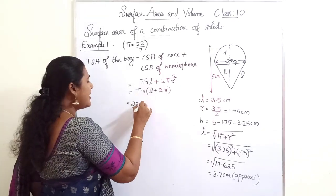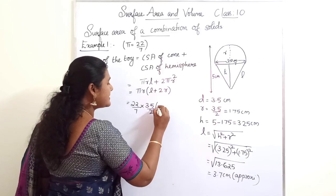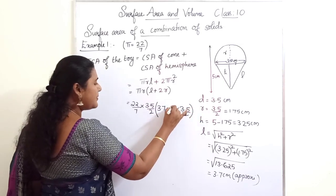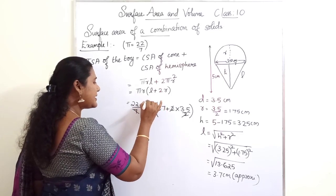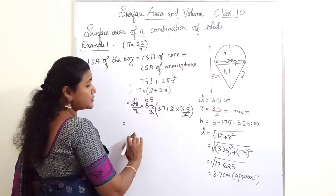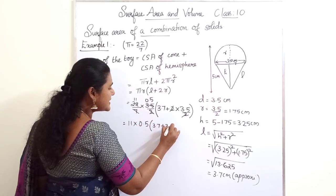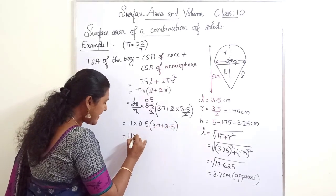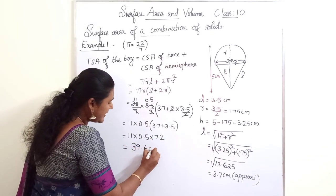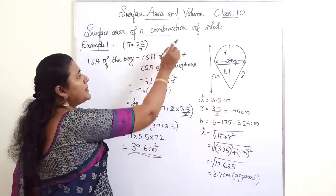Now substituting the values: π = 22/7, R = 3.5/2, L = 3.7. The expression becomes (22/7) × (3.5/2) × (3.7 plus 3.5). After simplification — cancelling 2, 7 and 3.5, and 22 — we get 11 × 0.5 × 7.2, giving the final answer of 39.6 cm². This is how we find the total surface area of combination of solids.